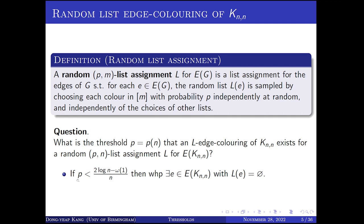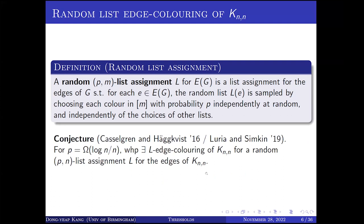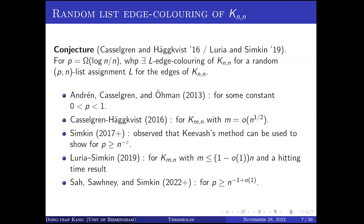Let me mention some random list edge coloring of the complete bipartite graph. A random P-M list assignment L for the edge set of graph G is a list assignment for the edges of G such that for each edge e, the random list L(e) is sampled by selecting each color in 1 to M with probability P independently, and also independently of the choices of other lists. There is a natural question asking about the threshold for which an L-edge coloring of the complete bipartite graph exists for a random P-M list assignment L. We have a lower bound on the threshold: if P is slightly less than 2 log N over N, then there is always an edge with an empty list, which means we don't have an L-edge coloring. So the threshold P should be asymptotically at least log N over N.